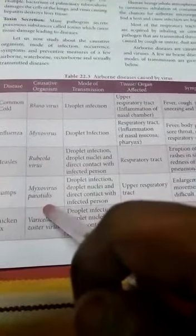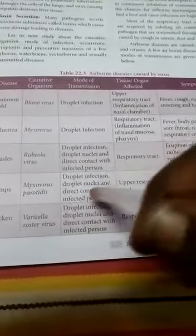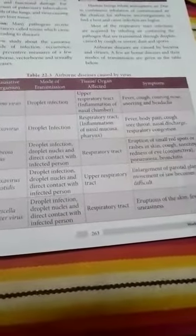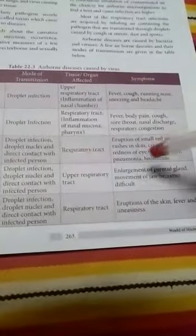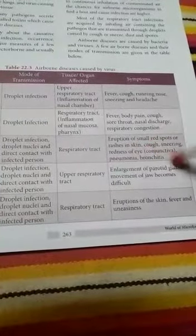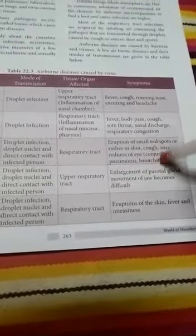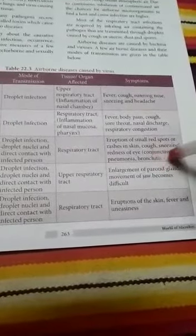Mumps is caused by myxovirus parotitis. It spreads through droplet infection, droplet nuclei, and direct contact with an infected person. The respiratory tract is affected, and there is enlargement of the parotid gland, which is one of the salivary glands located near the ear.